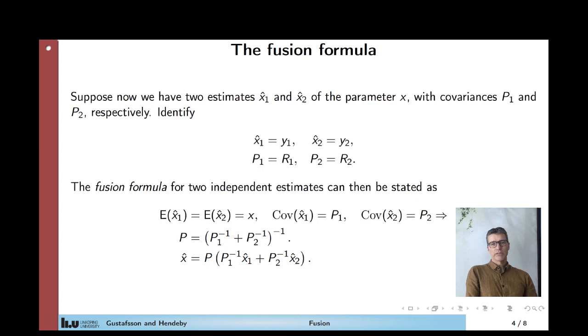So reading out the last equation here, x hat is the weighted combination of P1 inverse x hat 1 plus P2 inverse x hat 2, and then the normalization matrix in front of that one to make it unbiased.